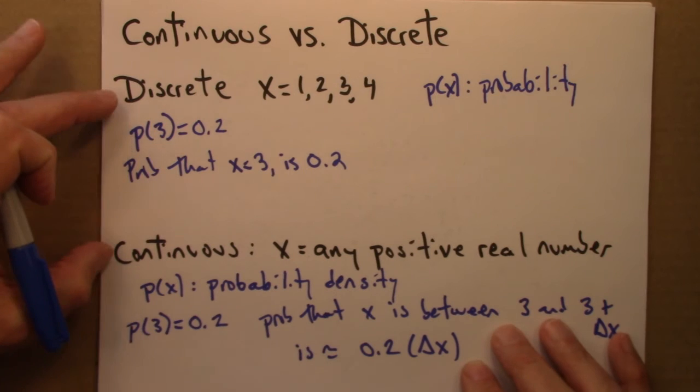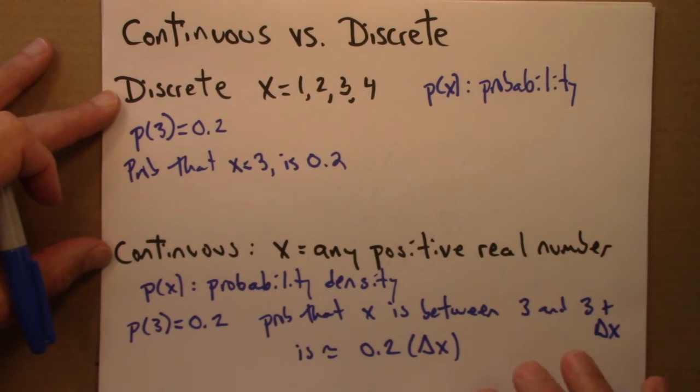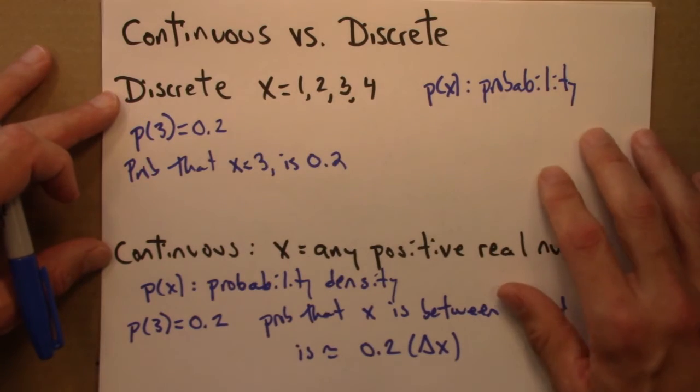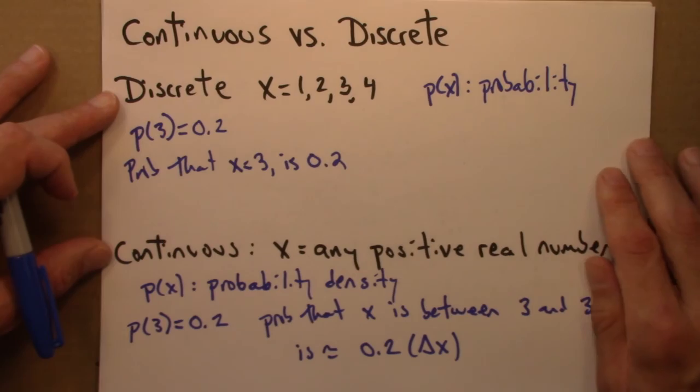So in any event, discrete and continuous probability are different entities, have different mathematical properties and need to be treated differently. I don't think we'll need to worry about that too much in this course, but I did want to at least mention this to avoid any potential confusion.